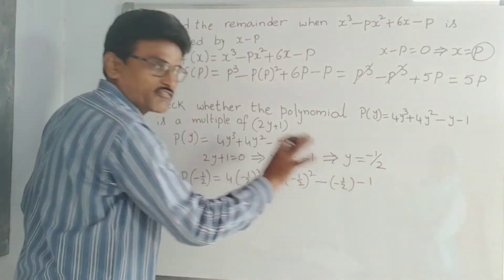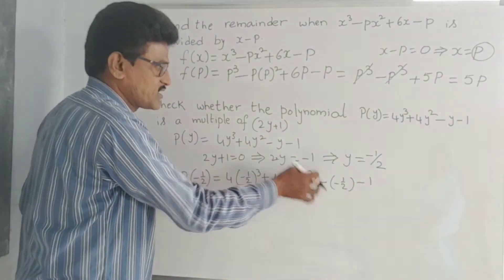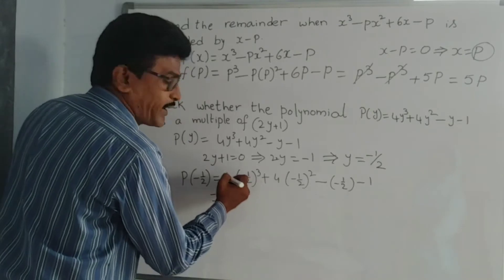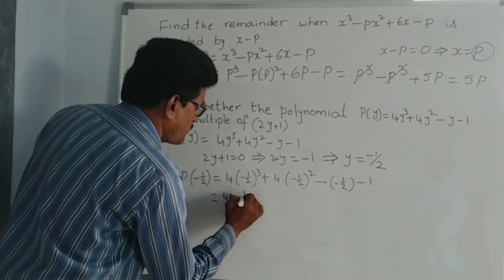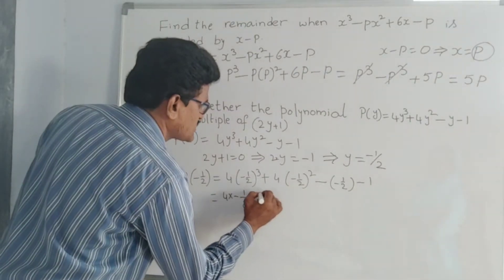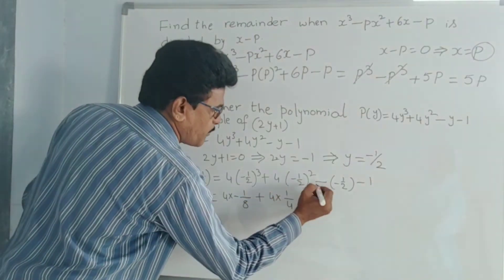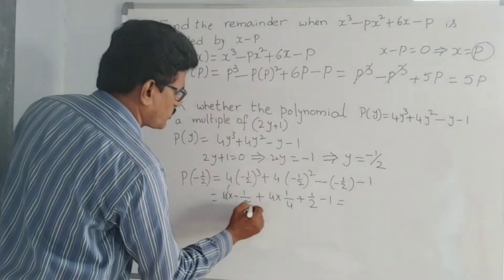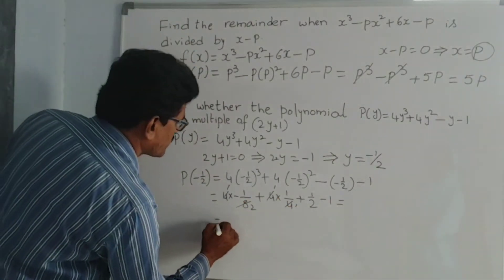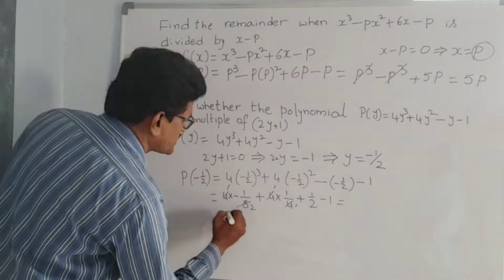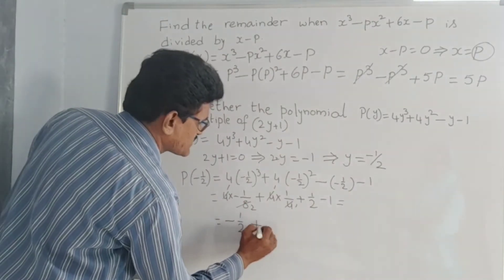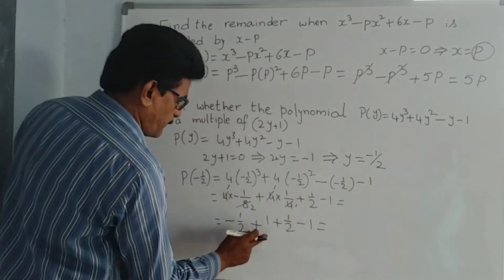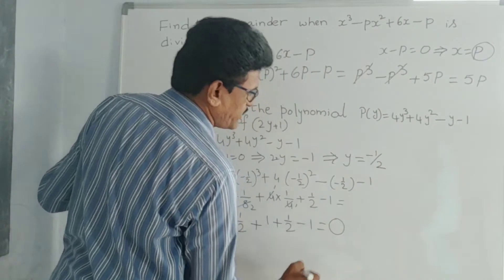4 into minus half cubed: minus is 3 times so minus, and 1 by 2 cubed is 1 by 8. Plus 4 into 1 by 2 squared is 1 by 4. Minus bracket minus half close bracket, and minus 1. So we get minus half plus 1 plus half minus 1. Plus 1 minus 1 cancel. Minus half plus half cancel. We are getting remainder 0.